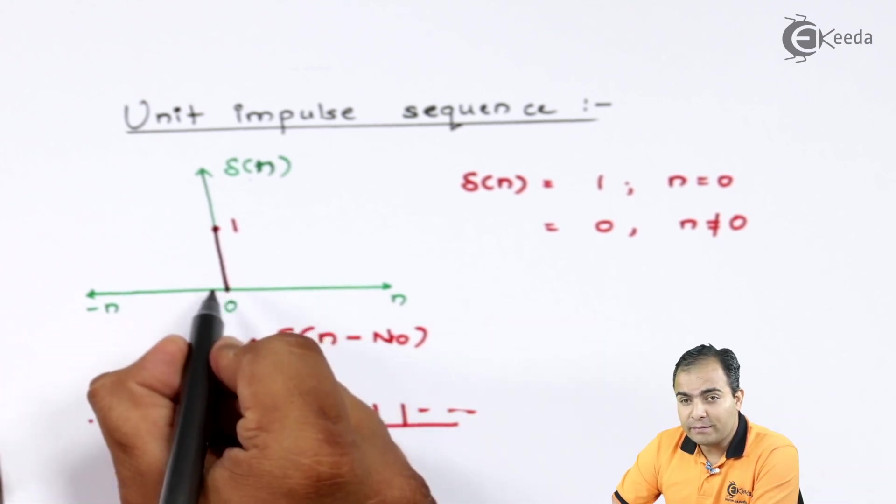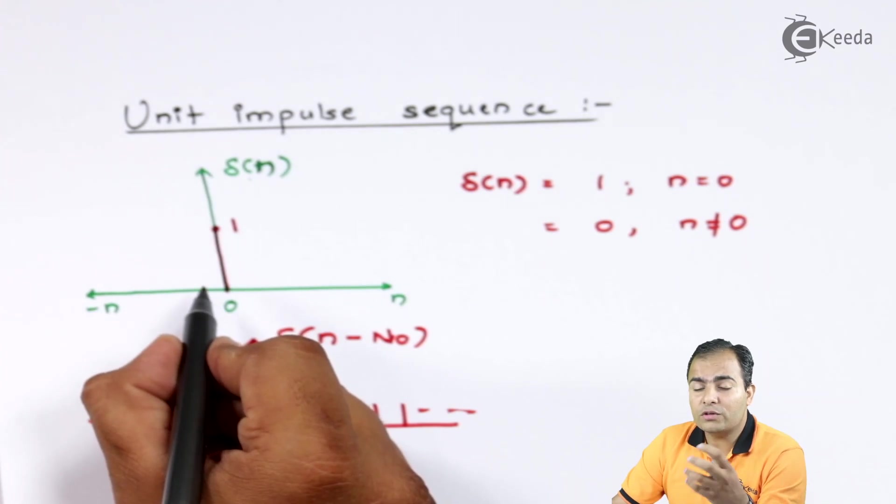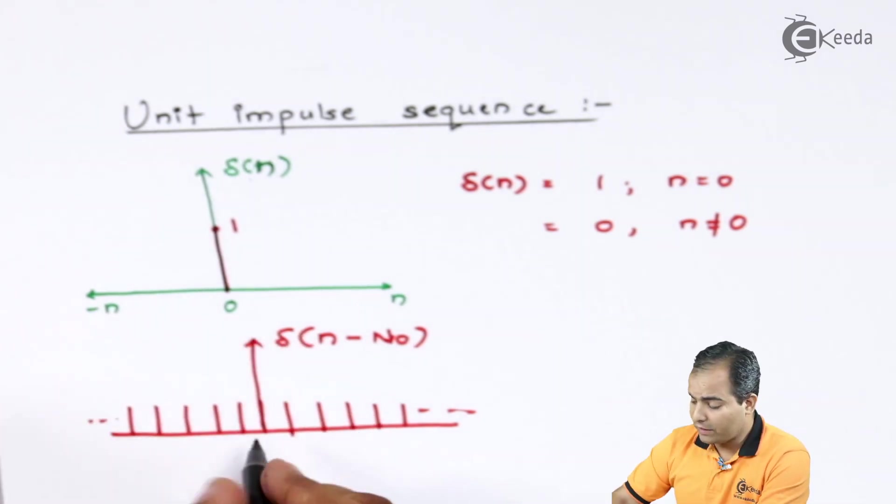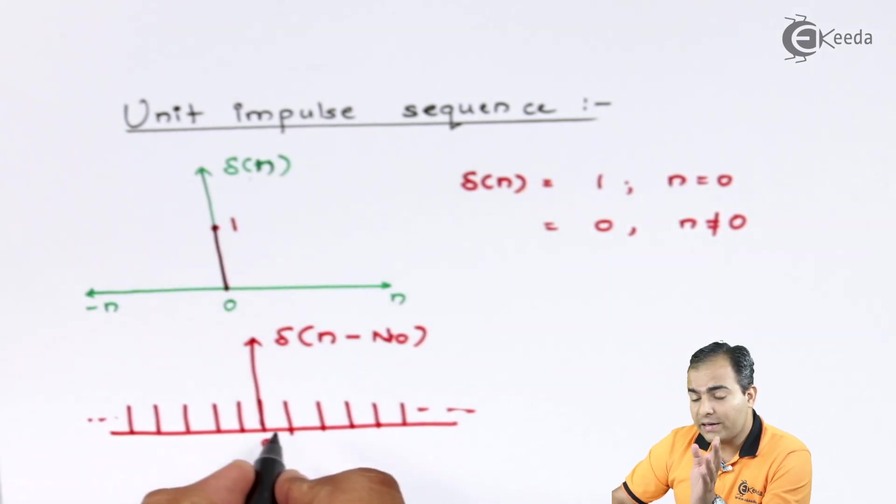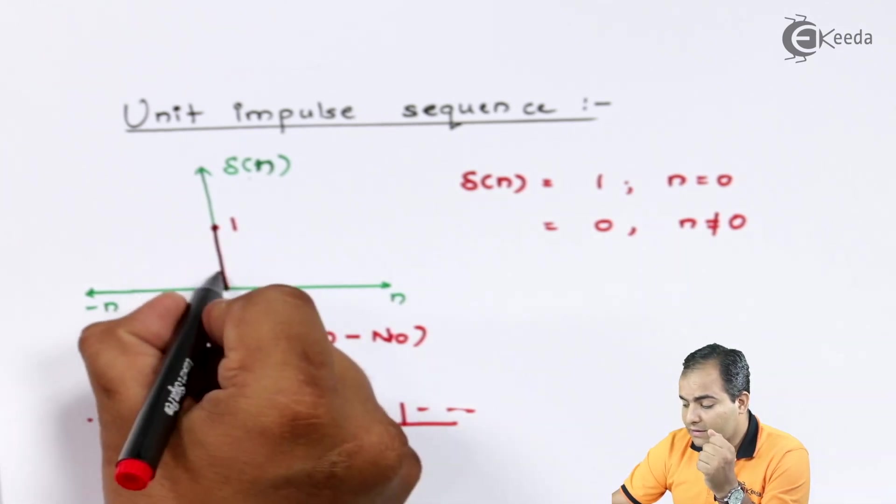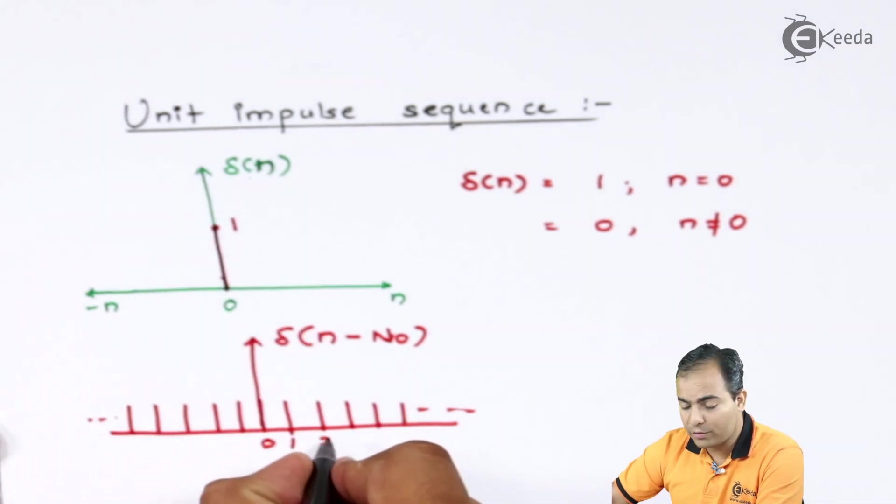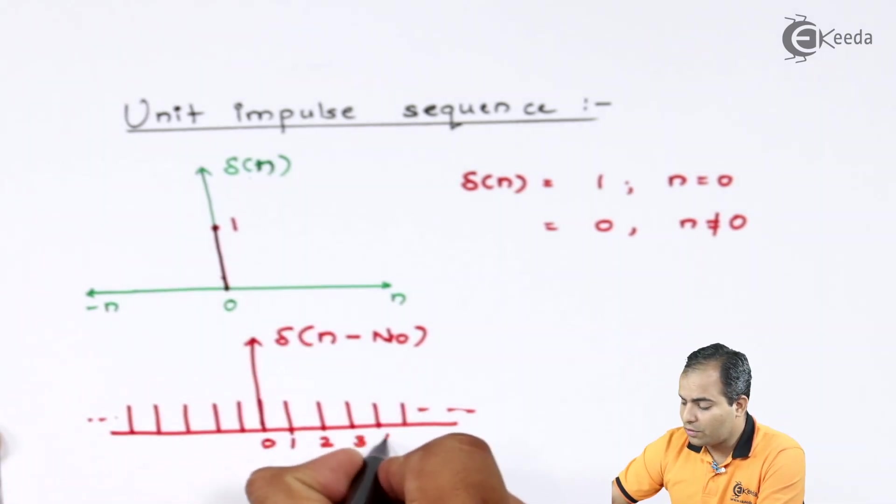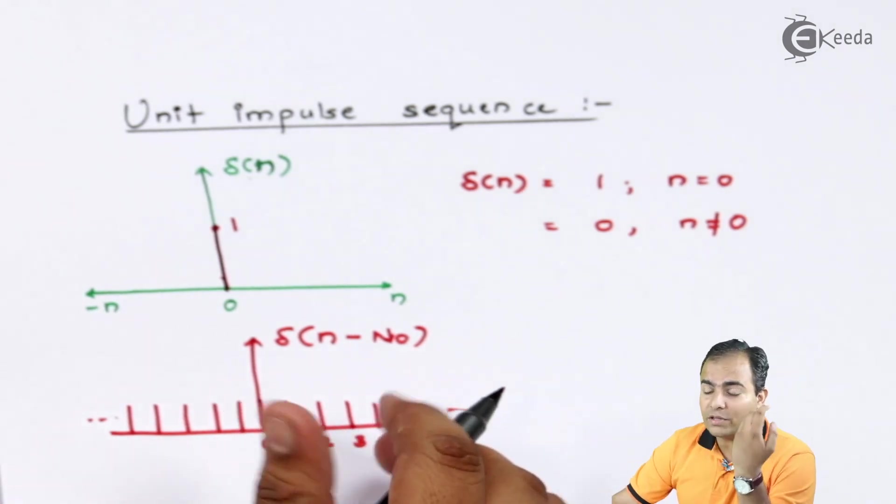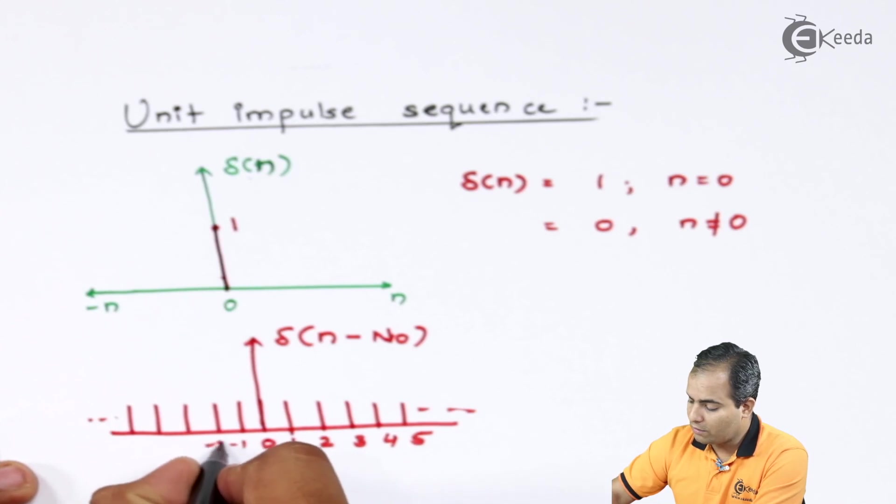If this sample is delayed by one or two or three and so on, you will get this type of equation. So if your graph is delayed by one, then the sample will be available at one. Similarly, if you delayed this graph by two, your sample will be available at two, and so on. Similarly, if you advance this graph by one, two, three, then your graph will look like this.